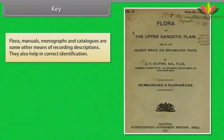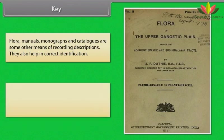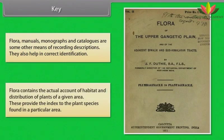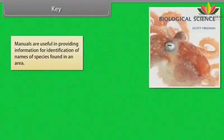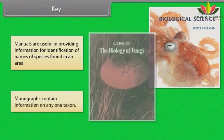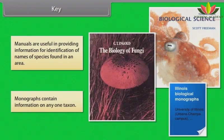Flora, manuals, monographs and catalogues are some other means of recording descriptions and help in correct identification. Flora contains the actual account of habitat and distribution of plants of a given area and provides an index to the plant species found in a particular area. Manuals are useful in providing information for identification of names of species found in an area. Monographs contain information on any one taxon.